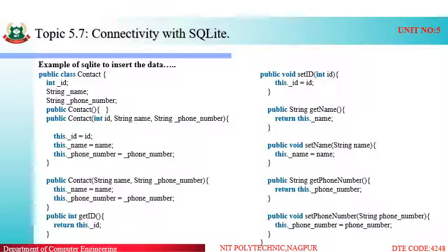Next we have created getter methods such as getId(), which gets the id — similar to the get and set methods used in Java. Get will get the value and set will set the value to the particular instance variable. Similarly, for name and phone number we have done the same. In this way we have created a Java class to initialize DML transactions inside our database — a simple class called Contact with three variables: id, name, and phone number, with constructors and getter/setter methods.